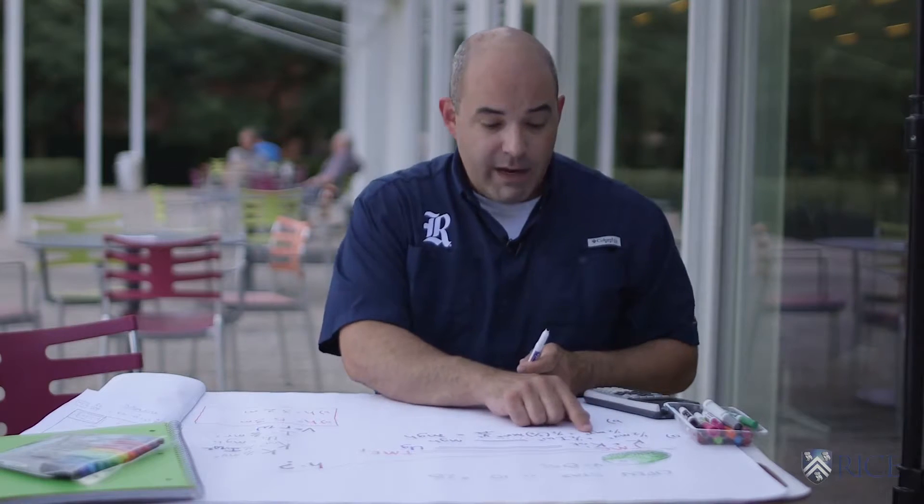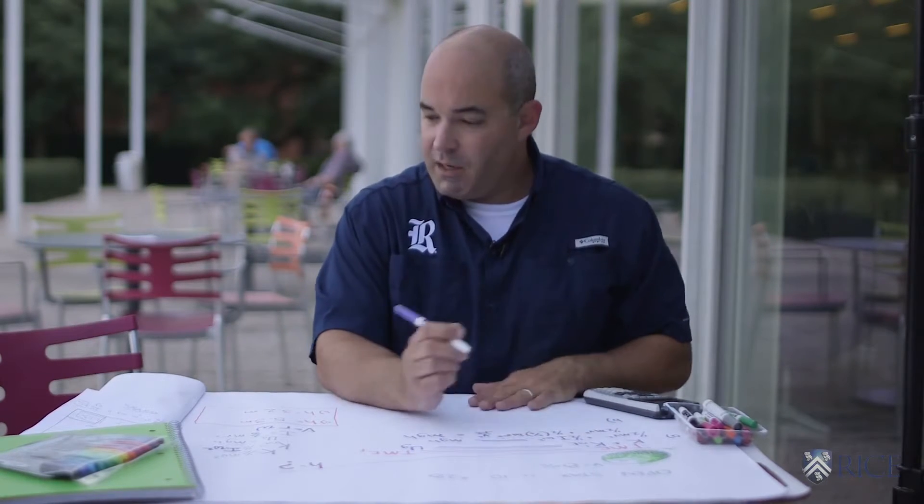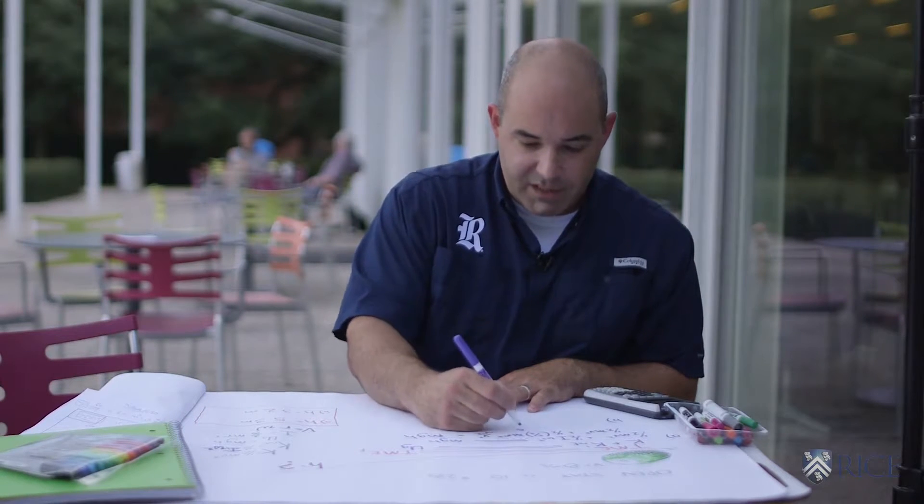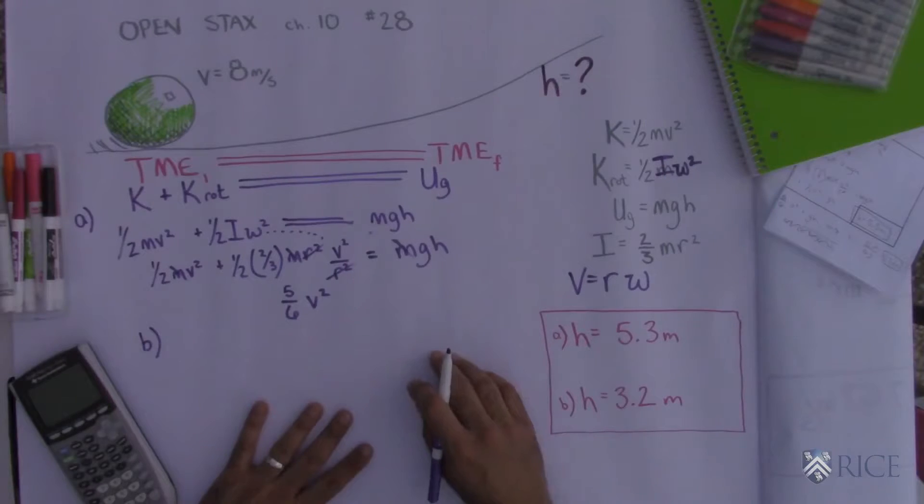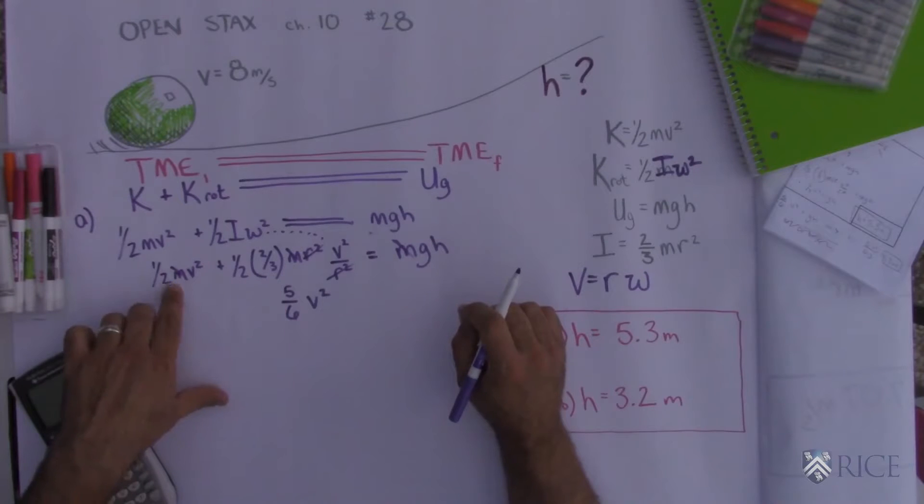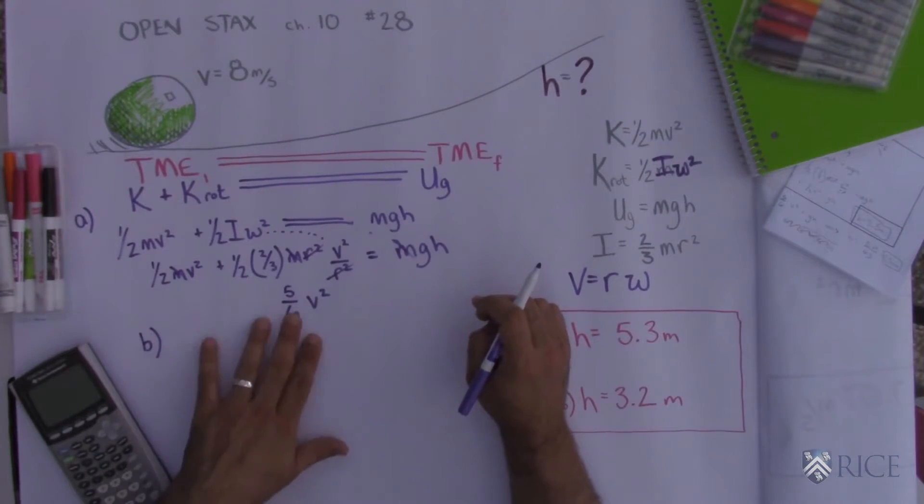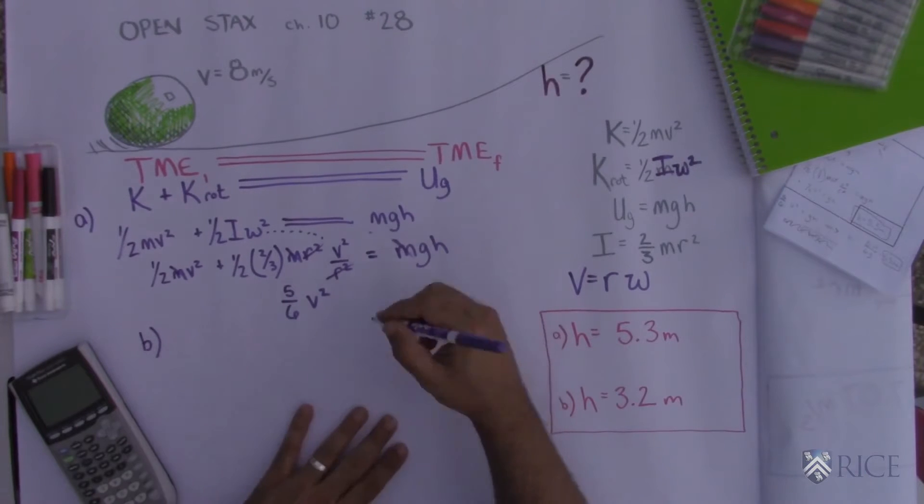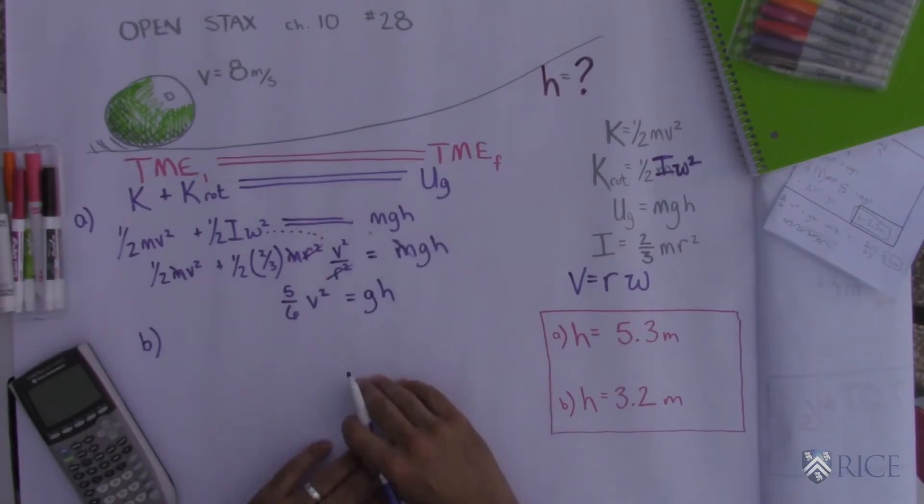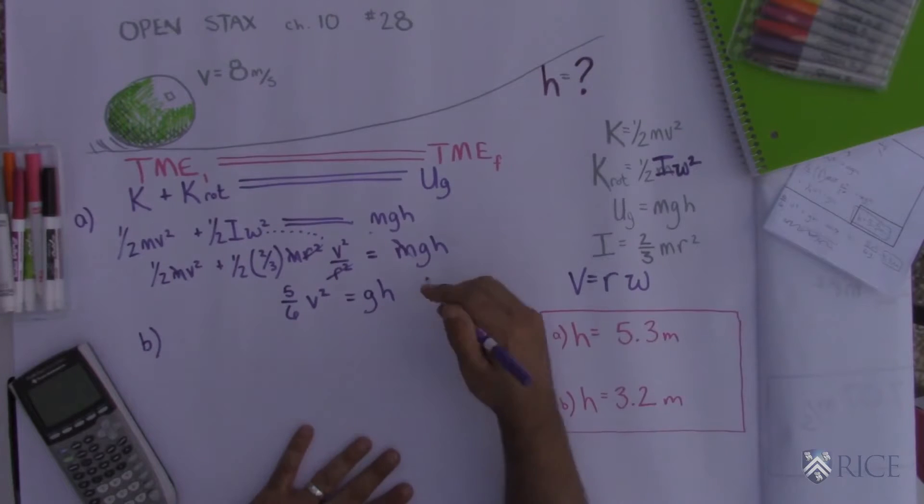So let's see. Alright, one-half plus one-sixth comes out to be five-sixths. Okay, so I'm gonna simplify this. I take one-half v squared plus one-third v squared and that comes out to be five-sixths v squared, which is equal to gravity times height. That's the height that we're trying to find.